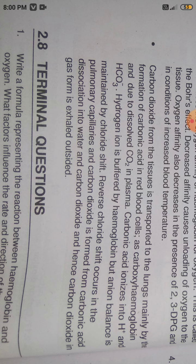So, carbon dioxide is transported in three ways: as carbonic acid formation, as carboxyhemoglobin, and as dissolved CO2 in plasma. Carbonic acid ionizes into H+ and HCO3-, and the hydrogen ions are buffered. The anion balance is maintained by the chloride shift method. The reverse chloride shift method operates in the pulmonary capillary, where carbon dioxide is formed from carbonic acid dissociation into water and CO2, and is then exhaled outside.